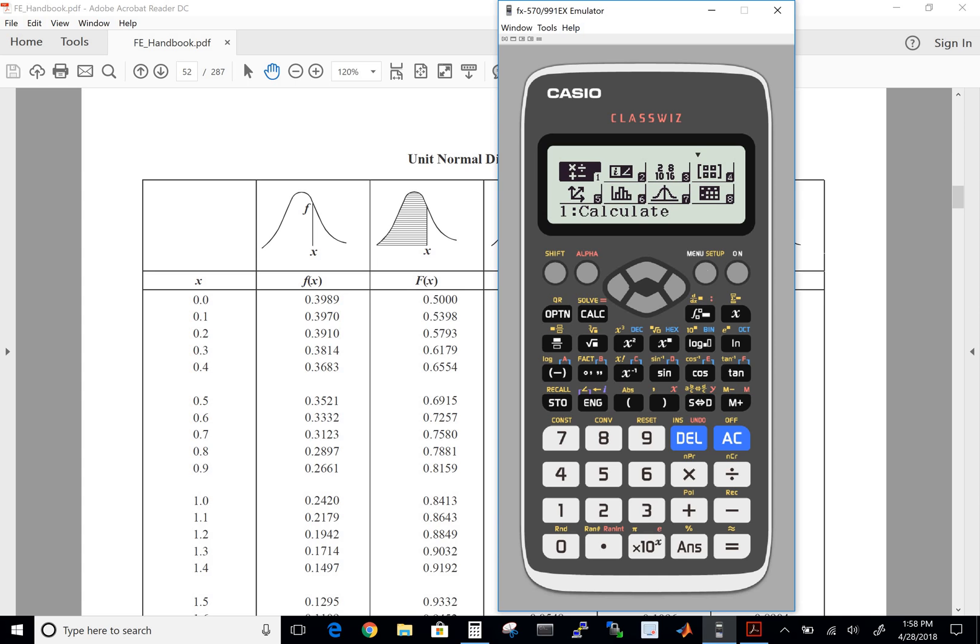Now if we hit the menu button, we have number seven here, which is the distribution section, so we can hit seven. And here we have a normal probability distribution and a normal cumulative distribution.